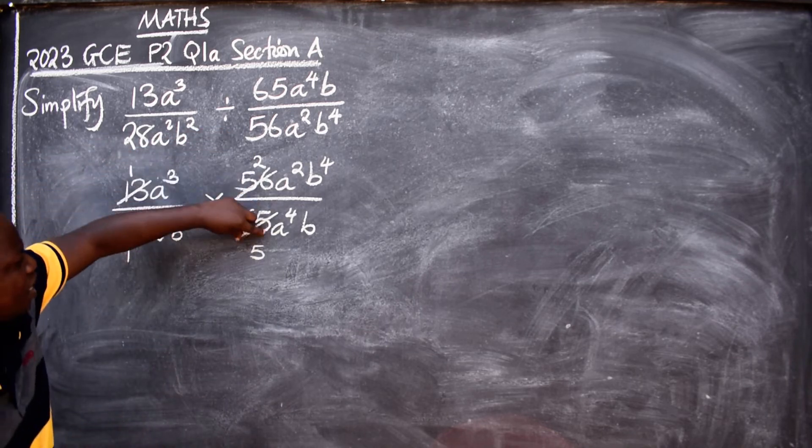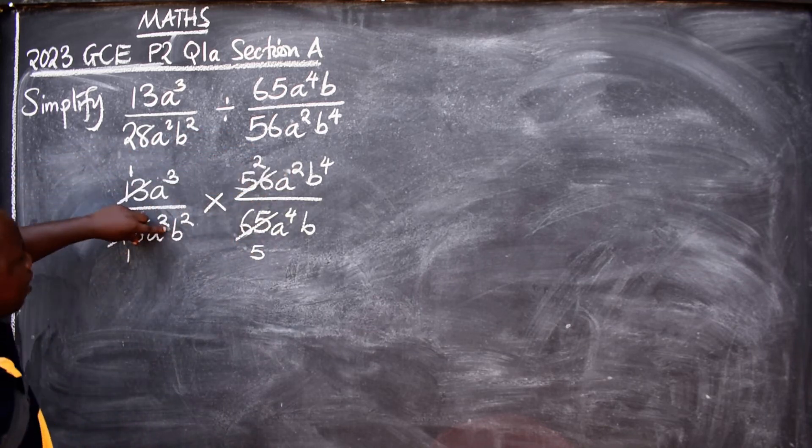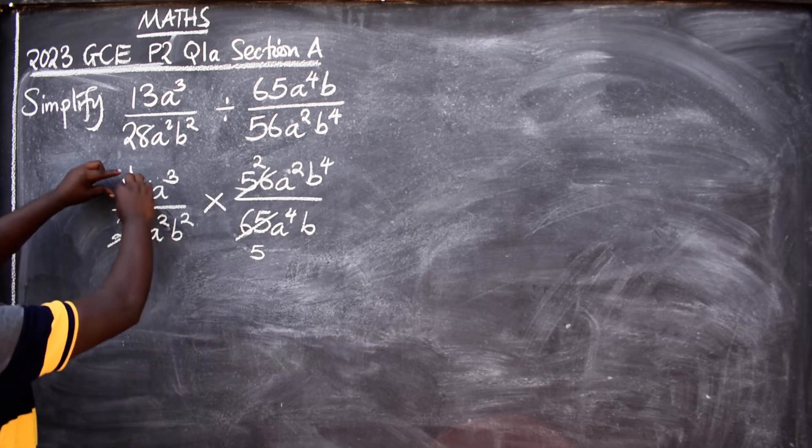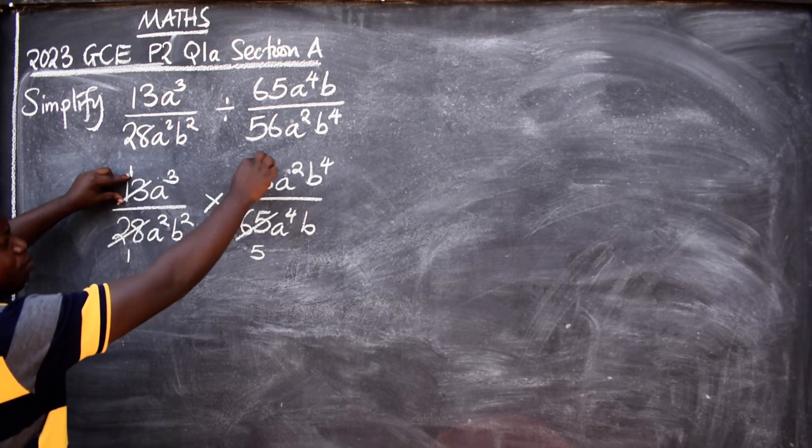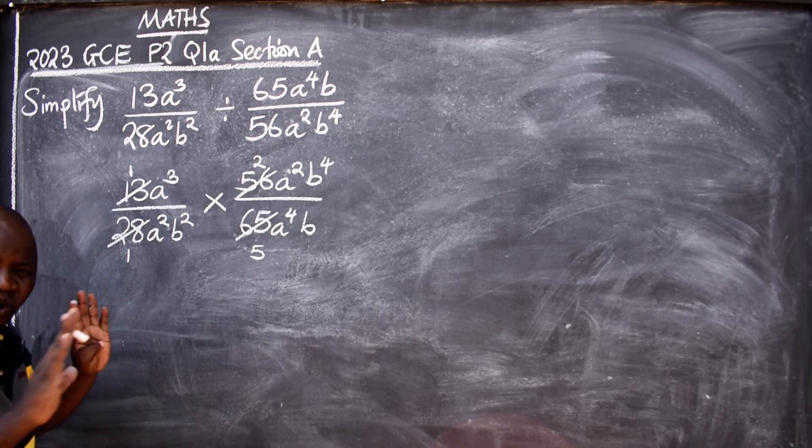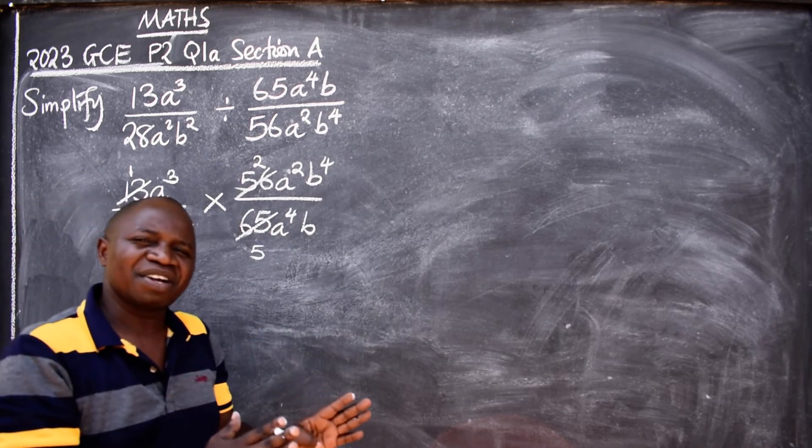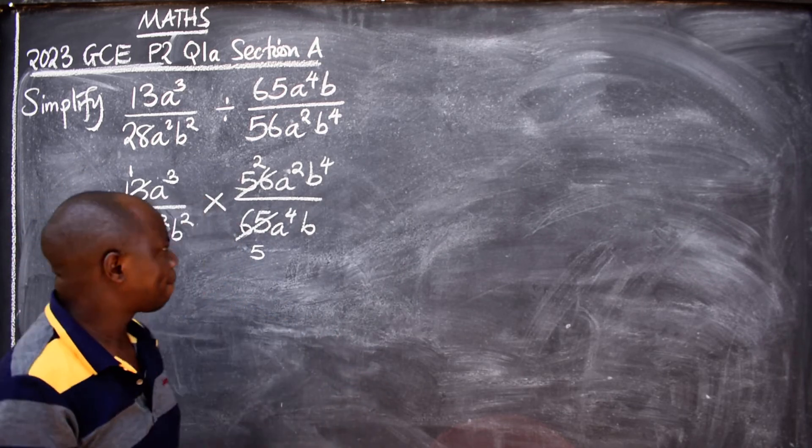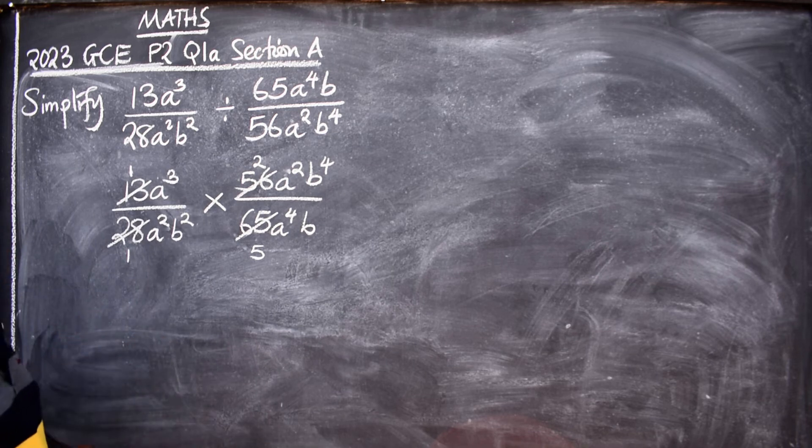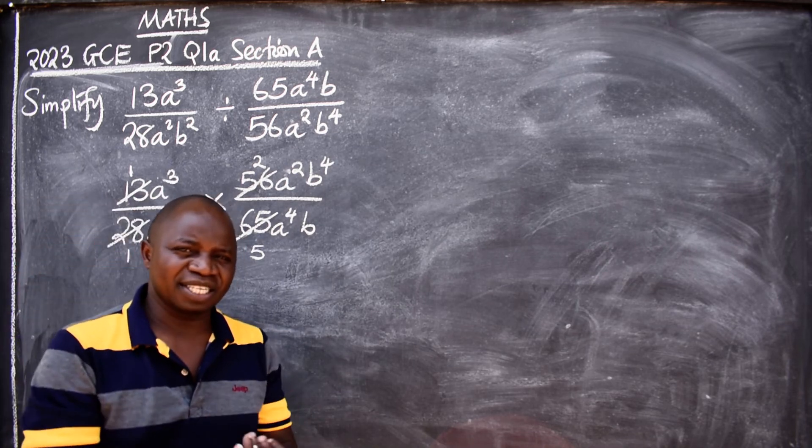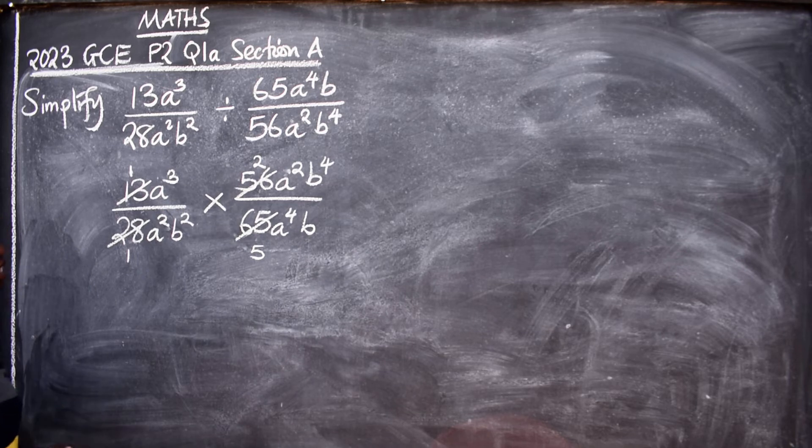You can cancel this way, but don't cancel like this: numerator-numerator, denominator-denominator. No, it's only numerator and denominator. We are done with numbers. Let's now go to variables or letters.